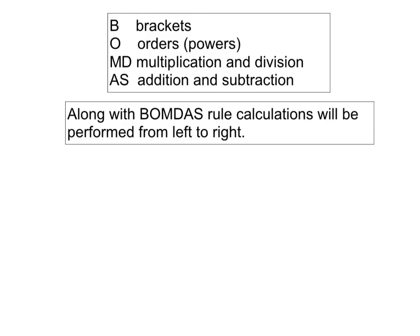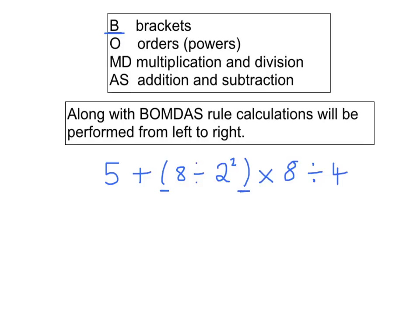So let's try another example using our BOMDAS rule and our left to right rule. And this one here is 5, add 8, divided by 2 squared, multiplied by 8, and divide it by 4. Our BOMDAS rule tells us to do brackets first. So that's what we're going to do. We're going to look at this bracket here. But within the bracket, there's a calculation in itself that we have to apply the BOMDAS rule to also, and here you've got a power, 2 to the power of 2, and the BOMDAS rule will say that powers are performed before the division.